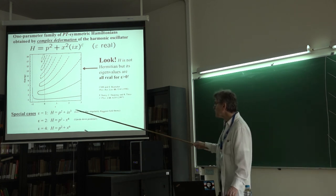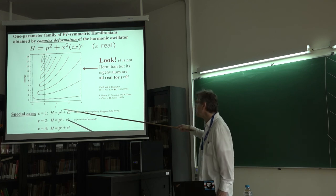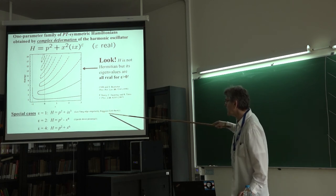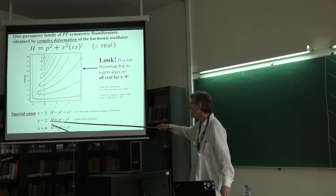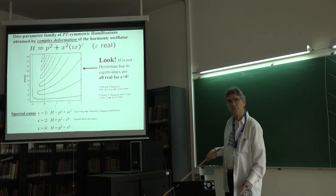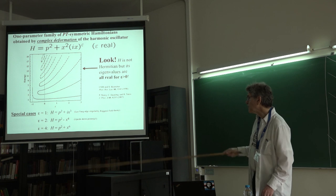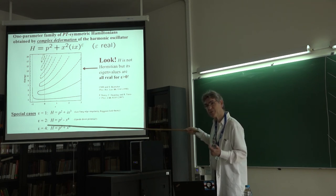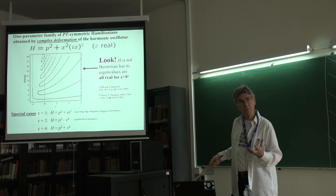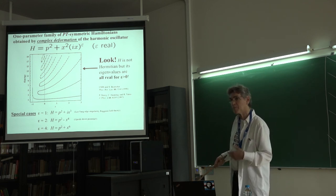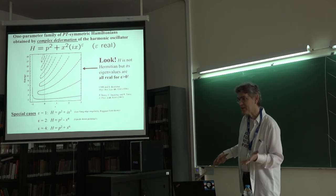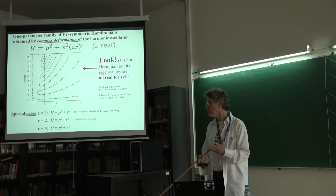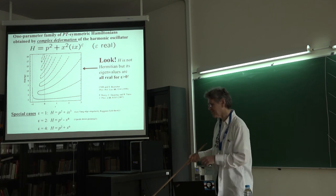There are interesting special cases. When epsilon equals 1, this is the Hamiltonian people studied for the Lee-Yang edge singularity or Reggeon field theory. When epsilon equals 2, you get an upside-down potential that has real eigenvalues — a remarkable potential that looks unstable but isn't. It is dynamically stable but statically unstable, like a bicycle: a bicycle won't stand up by itself when static, but when moving it's stable.